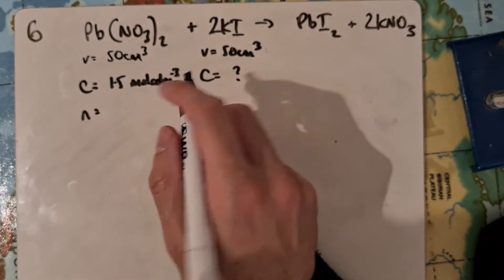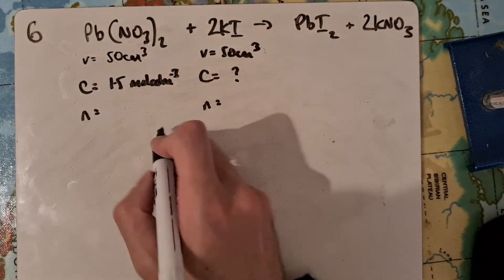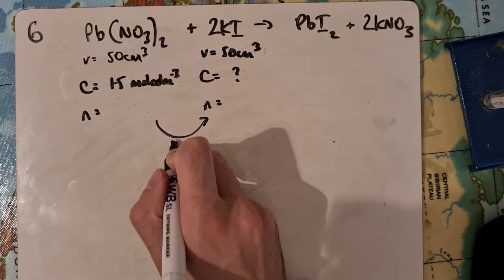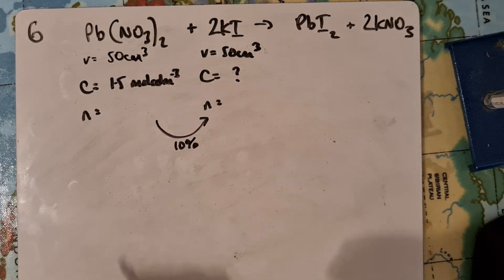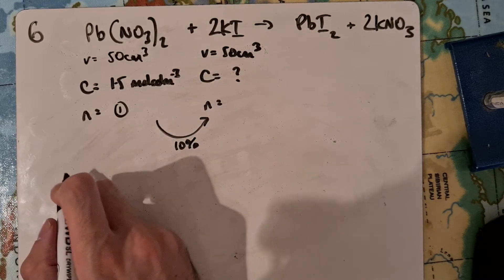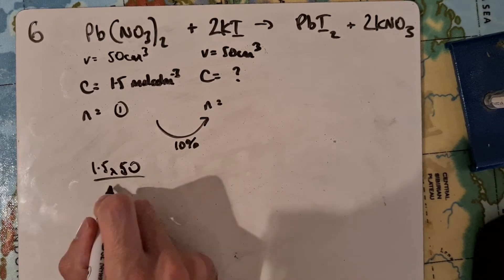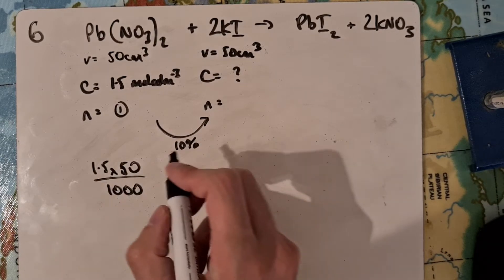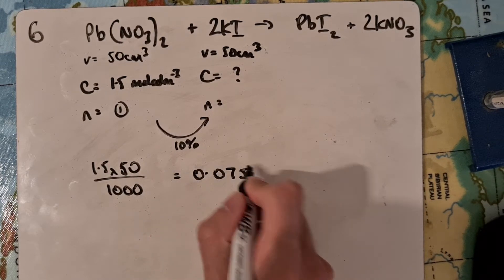We know as well that there's 10% more of the potassium iodide. So first off we can calculate the number of moles here which will be 1.5 times 50 over 1,000, or 0.075.